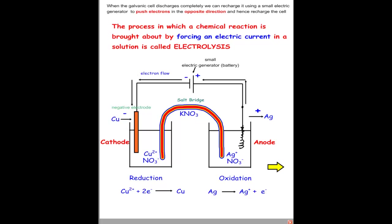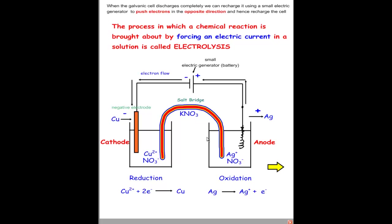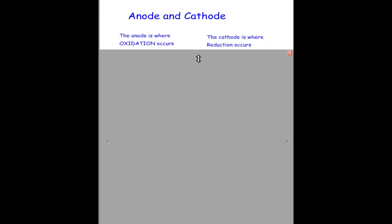In a normal galvanic cell run over time, all the copper slowly dissolves away due to oxidation on that side, while silver ions collect electrons and produce silver. Eventually you run out of silver ions on one side and copper on the other — the cell discharges. To recharge it, you force an electric current through, causing copper to build up again on one side and silver to be removed from the other. That reverse process is electrolysis.